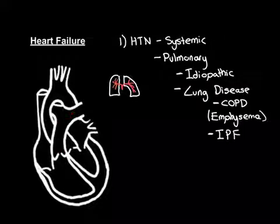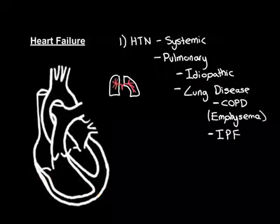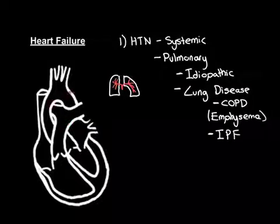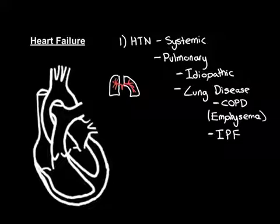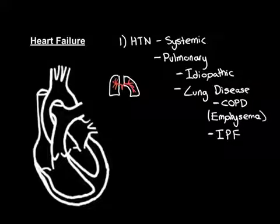Pulmonary hypertension can lead to the right ventricle not being able to pump blood against this elevated pressure. Remember, the right ventricle isn't designed to pump against very high pressure — the normal pulmonary system pressure is tiny compared to the systemic arterial system. If it rises to levels almost as high as the systemic arterial system, the right ventricle simply can't cope, and you get failure of the right ventricle to pump enough blood — leading to heart failure. So systemic hypertension leads specifically to left heart failure, and pulmonary hypertension leads to right heart failure.